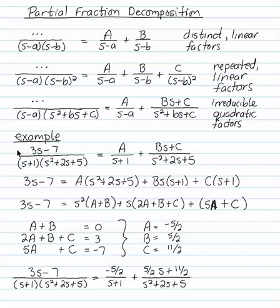For example, 3S minus 7 over S plus 1 times S squared plus 2S plus 5. I can try to split that into two fractions. Something over S plus 1, something over S squared plus 2S plus 5. But the something over the second fraction has to be a line. I check that this quadratic does not factor, so I'm not in the first case. This is a quadratic equation that would have complex roots.